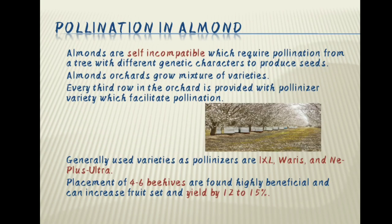Pollination in almond. Almonds are self-incompatible, which require pollination from a tree with different genetic characters to produce seeds. Almond orchards grow a mixture of varieties. Every third row in the orchard is provided with a pollinizer variety which facilitates pollination. Generally used varieties as pollinizers are IXL, Varus and Ne Plus Ultra. Placement of 4 to 6 beehives is found highly beneficial and can increase the fruit set and yield by 12 to 15%.